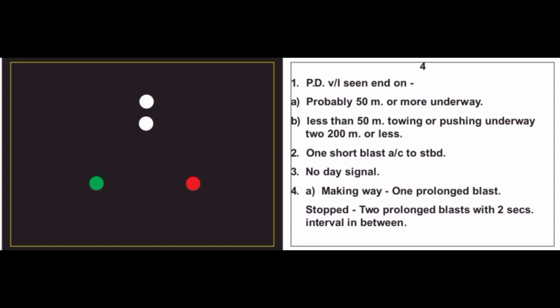Card 4 is similar to card 1. The difference is we can see two masthead headlights — two white lights — meaning a power driven vessel seen end-on. Two cases: the vessel is 50 meters or more underway, or the vessel is less than 50 meters towing or pushing underway with tow 200 meters or less. Action: one short blast, alter course to starboard. No day signal — if tow exceeds 200 meters, display one diamond forward, but as tow is less than 200 meters, no day signal. Sound signal: making way — one prolonged blast; stopped — two prolonged blasts with two-second interval.